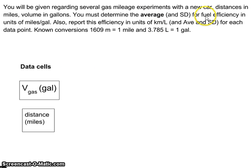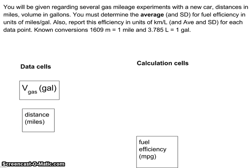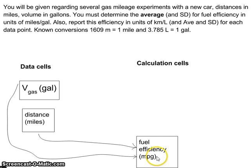The first thing I'm being asked is to calculate the fuel efficiency in units of miles per gallon. I have a number that's got miles and a number that's gallons, so if I want to get miles per gallon, I just need to take those two cells and divide them. I take the distance and divide by the volume to get miles per gallon. That's going to be a calculation cell over on the right-hand side.